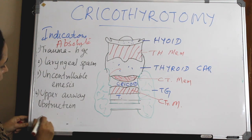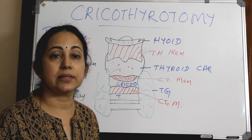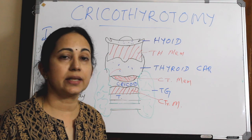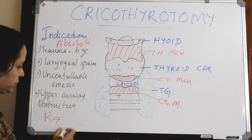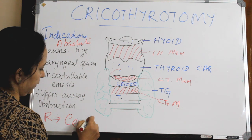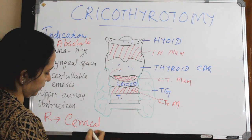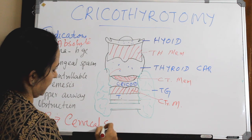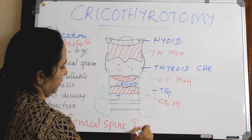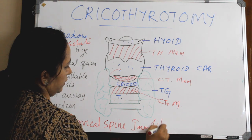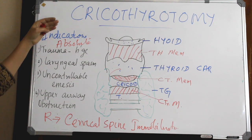One relative indication is cervical spine stabilization secondary to trauma or maxillofacial injuries. In that case, we can go for cricothyroidotomy. So these are the indications of doing a cricothyroidotomy.